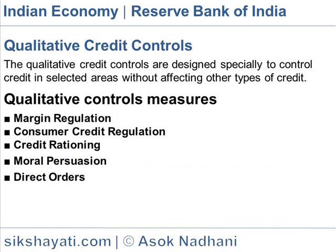Qualitative Credit Controls are designed specially to control credit in selected areas without affecting other types of credit. The selective credit schemes were introduced in 1956. Qualitative Credit Controls are very successful during periods of inflation. By imposing various restrictions and through direct action, the central bank can control credit.